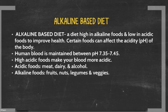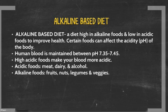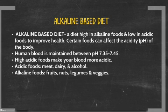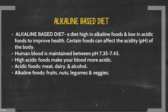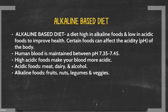High acidic foods make your blood more acidic. Examples of acidic foods include meat, dairy, and alcohol. Examples of alkaline foods include fruits, nuts, legumes, and veggies.